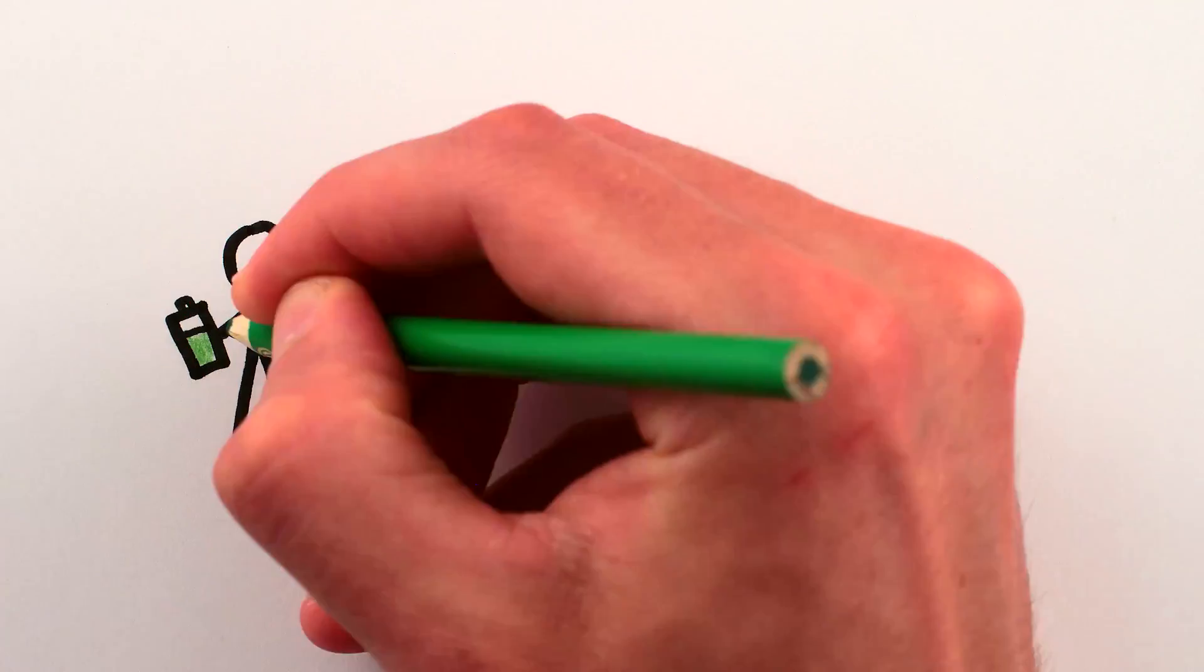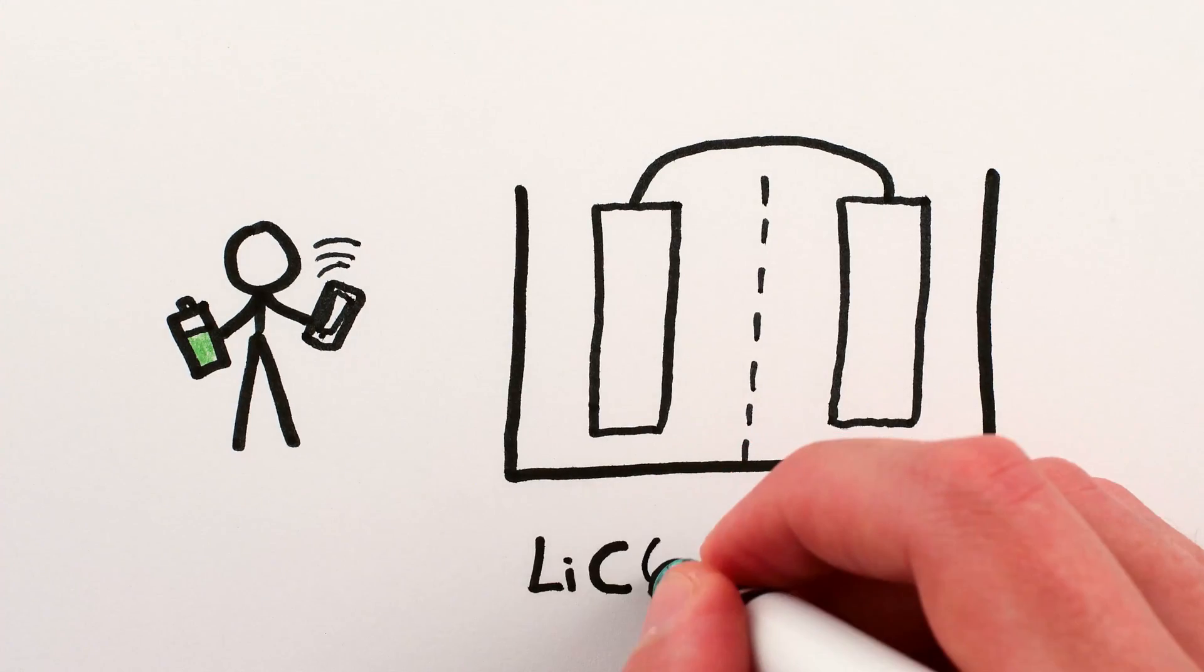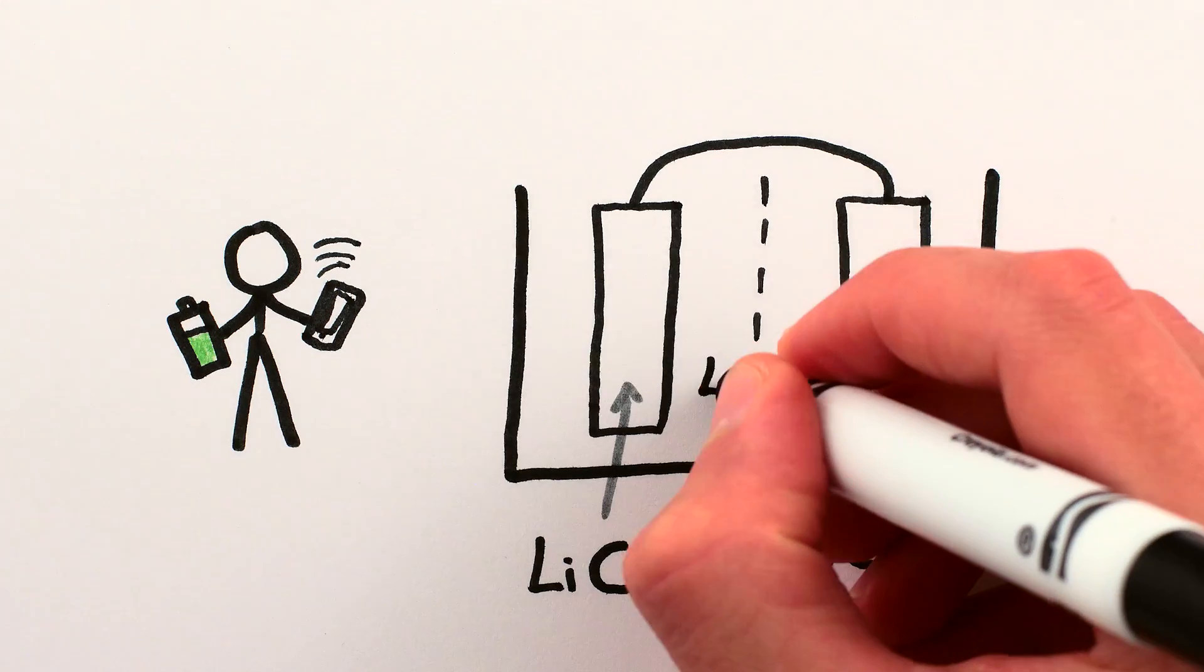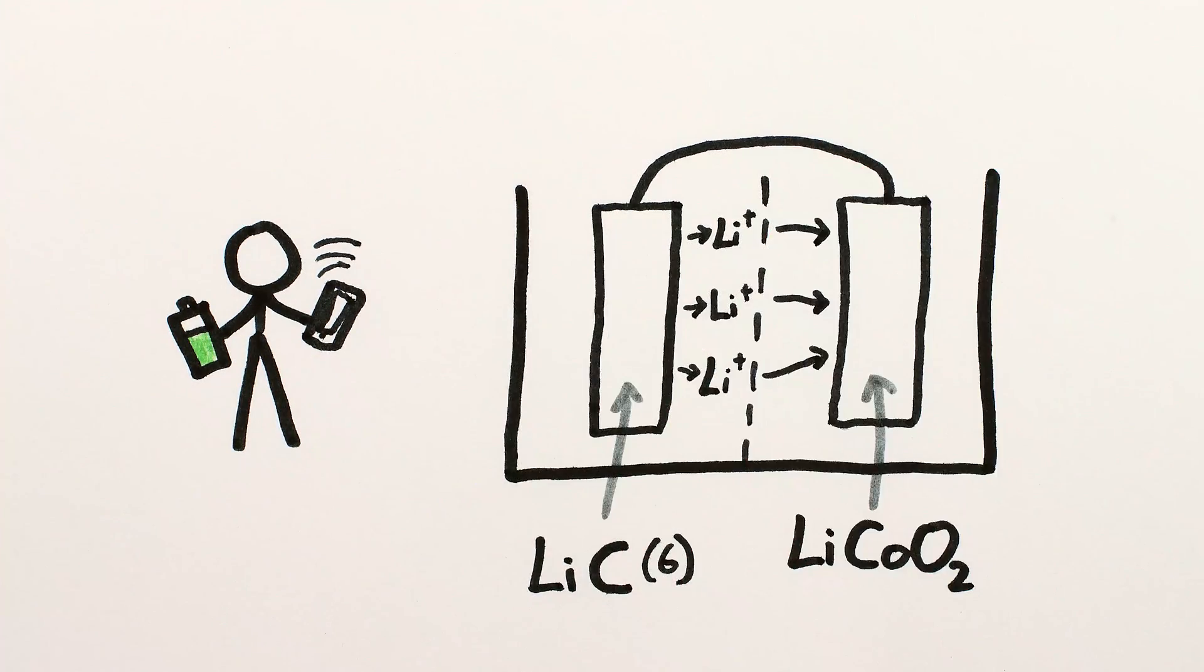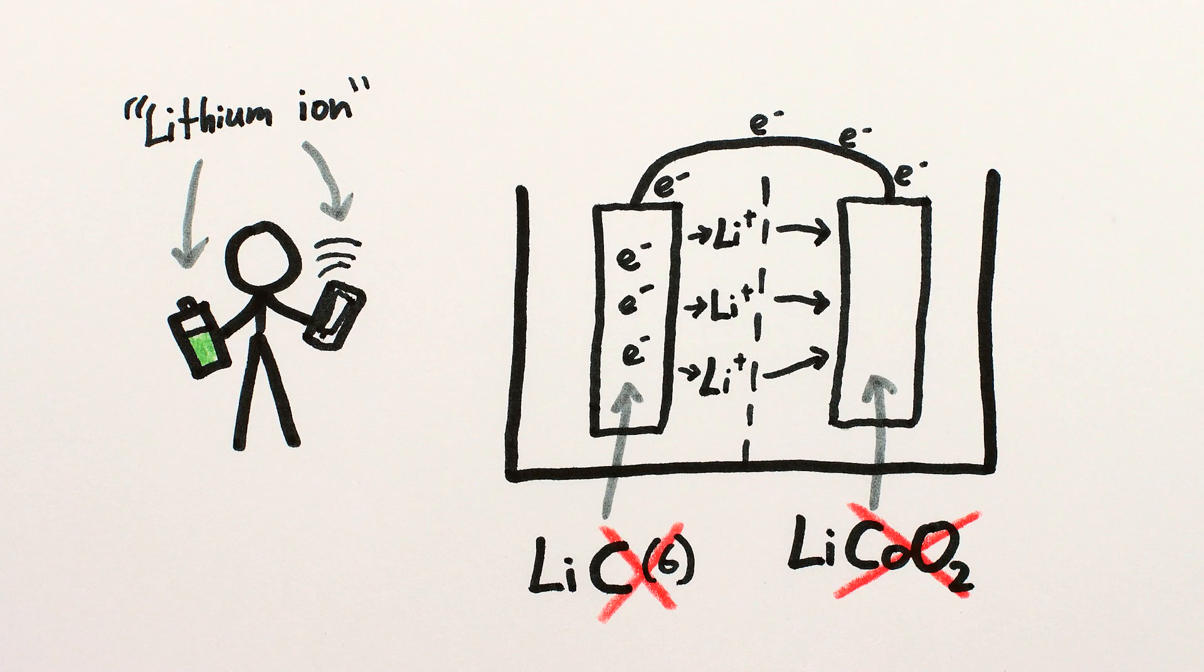The current standard for lightweight, rechargeable, and commercially safe batteries uses lithium and graphite on one side, with a variety of options for the other side – often lithium cobalt oxide. Lithium atoms are what either dissolve or deposit in order to transfer electrons – hence the name lithium-ion – while the other materials are dead weight along for the ride. I mean, they play important chemical roles, but they greatly increase the weight per electron transferred.